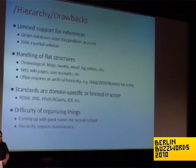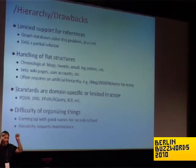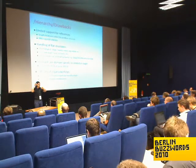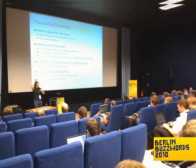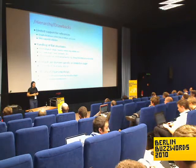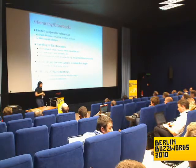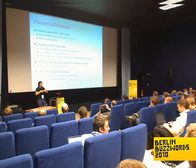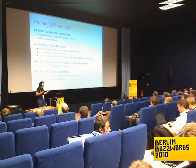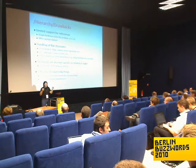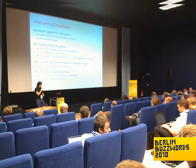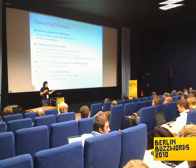A directed acyclic graph is a partial solution. Basically it's a tree where you can merge branches, assuming that none of the branches goes back up and forms a cycle in the graph. That model maintains some of the good parts of a pure tree model but still allows a little bit more flexibility in how you can relate different records together.